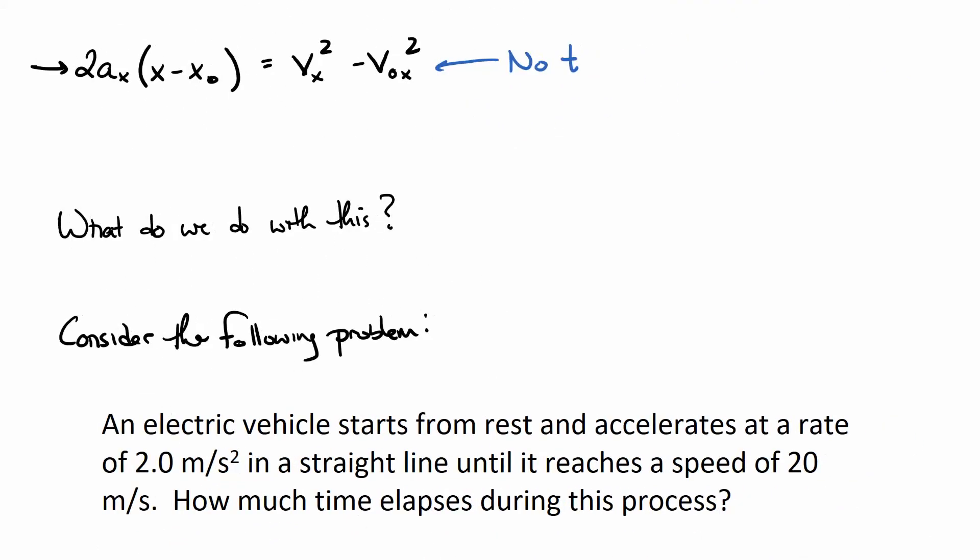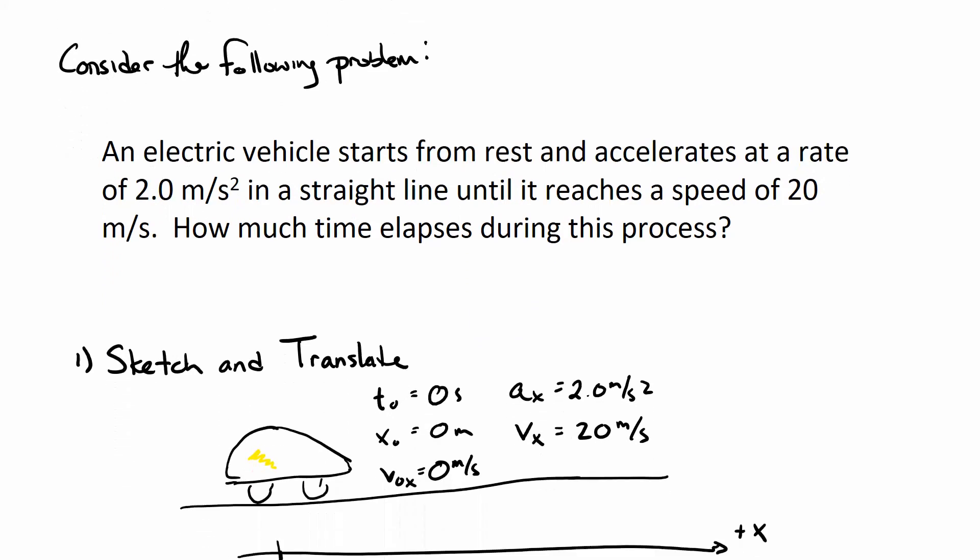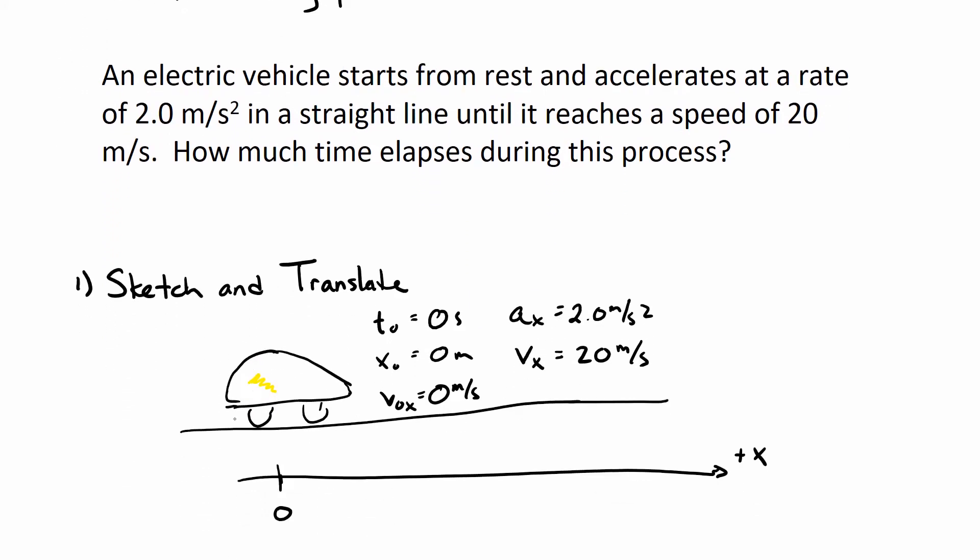So now what can we do with this? Consider the following problem. An electric vehicle starts from rest and accelerates at a rate of 2.0 meters per second squared in a straight line until it reaches a speed of 20 meters per second. How much time elapses during this process? So this is the process your book outlines for carrying this out. First step, sketch and translate. So what I've done here, I've sketched. I have my car, my object of interest. I've created a coordinate system. I've specified a positive x direction, an origin. And I've pulled out all of the information that I can from this problem. I know it starts from rest. That's an initial velocity. I know it accelerates at a rate of 2.0 meters per second squared until it reaches a final speed, a final velocity of 20 meters per second. And I want to know how much time elapses. So that's my big question.